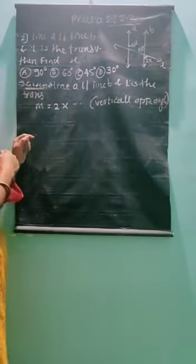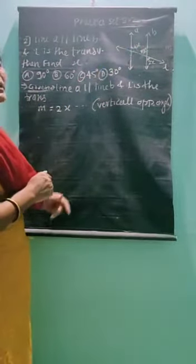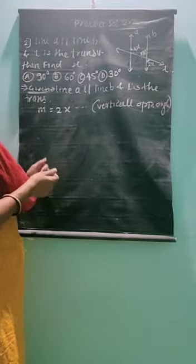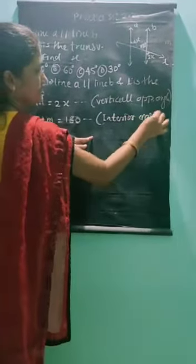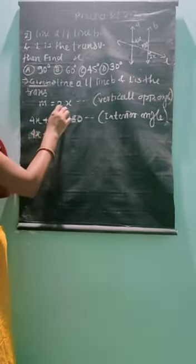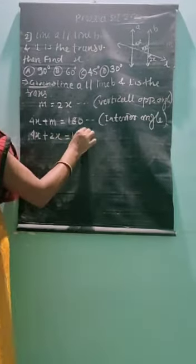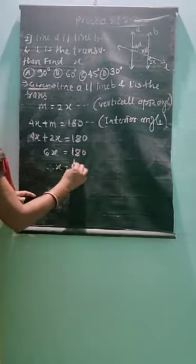Now, 4X and M — what is the relation between these two angles? Both are interior angles. When two parallel lines and one transversal is given, interior angles are supplementary, so 4X plus M equals 180. Substituting M equals 2X, we get 4X plus 2X equals 6X equals 180. Therefore X equals 180 divided by 6.